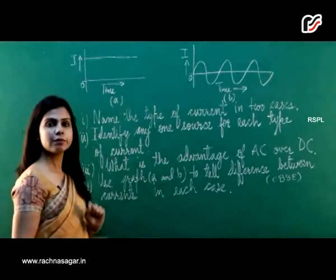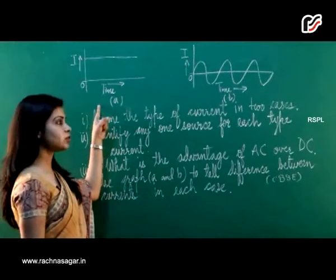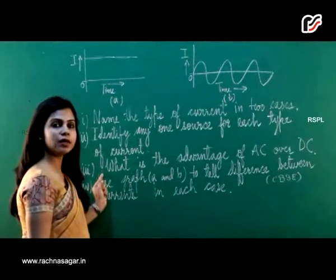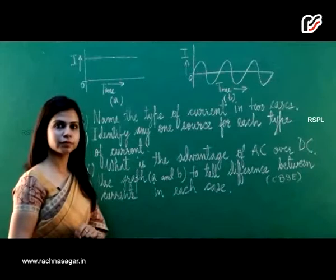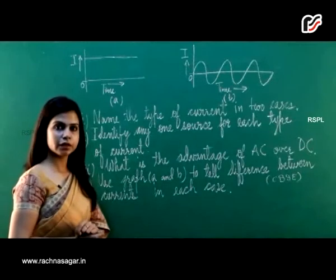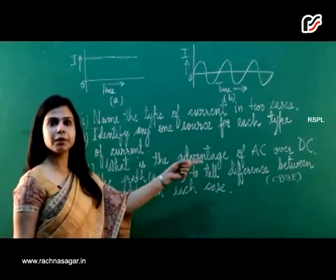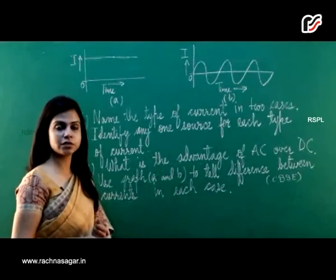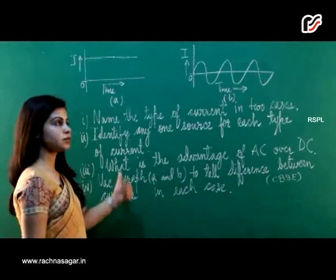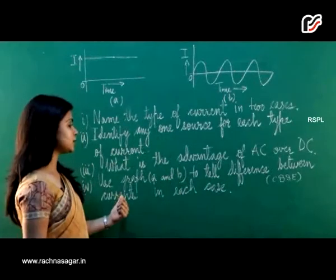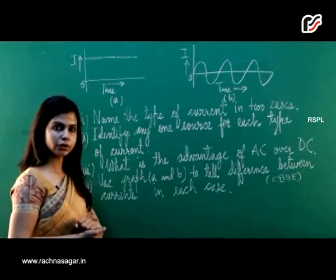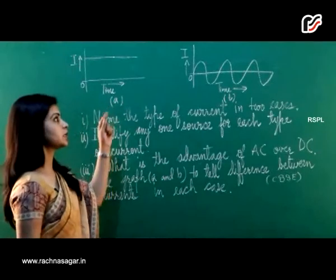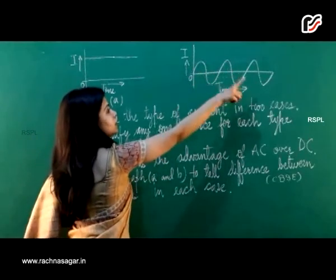Identify one source for each type of current. For DC current, the source is a cell or battery. For AC current, it is a generator. The advantage of AC over DC is that power can be transmitted over long distances without much loss of energy, because the value of the current can be stepped up or down with the help of electrical devices such as transformers. Using the graphs, two differences between the currents: in case A, the current is constant, while in case B, the current is varying in an orderly manner — meaning it is alternating current.